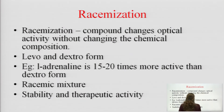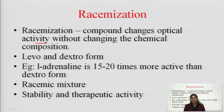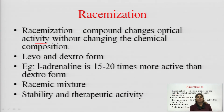Next is the racemization process. Racemization is when the compound changes its optical activity — either to the levo form or to the dextro form. When the drug changes between levo and dextro forms, its chemical composition, chemical properties, and physical properties also change. This is also a very important property to study in pre-formulation studies.